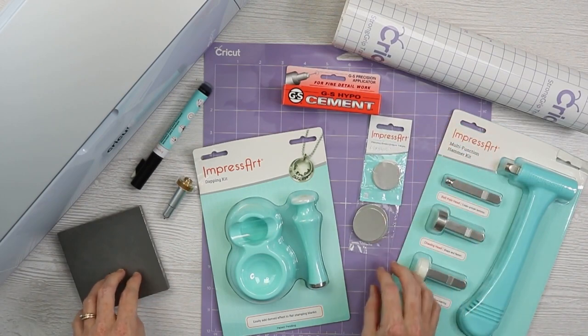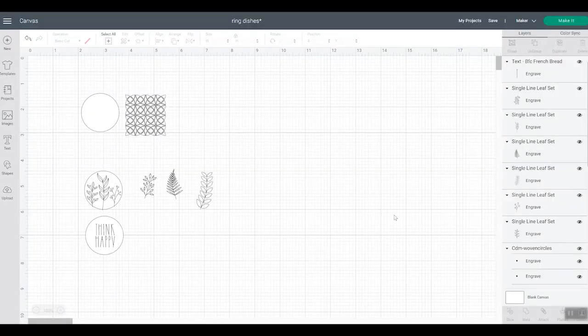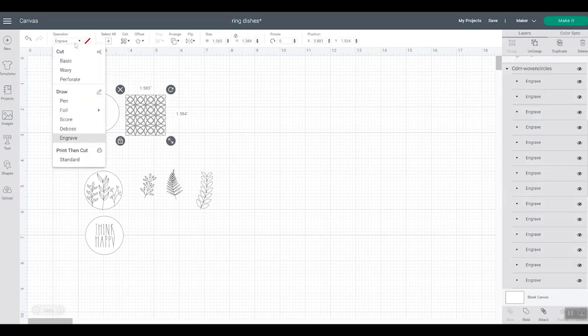So let's head to Cricut Design Space and take a look at the designs. Okay, for these ring dishes, this is what you need to do in Cricut Design Space. First of all, you will need a single line file of some sort, a file that draws, and then you would change those draw lines to engraved lines in Cricut Design Space.